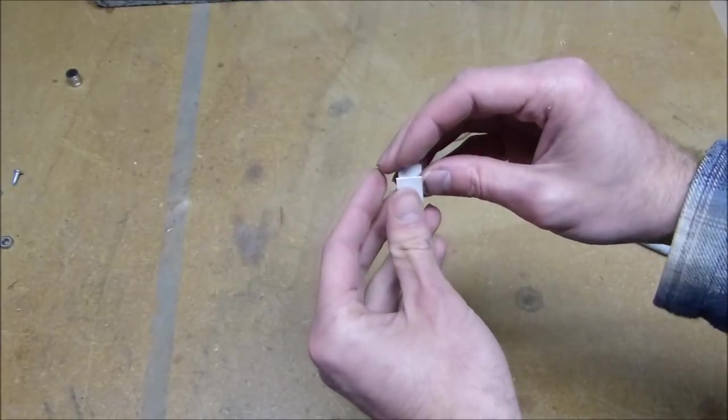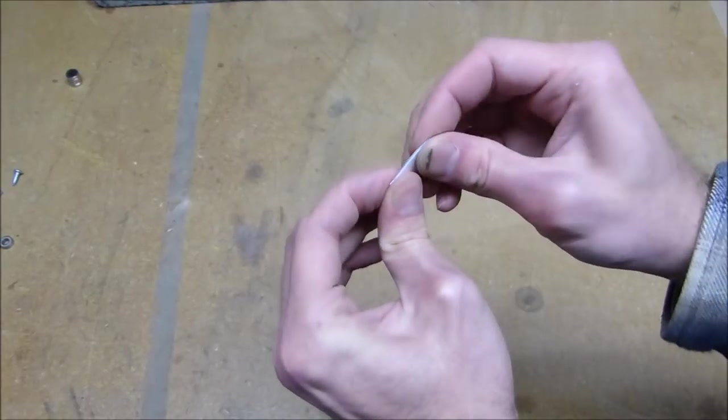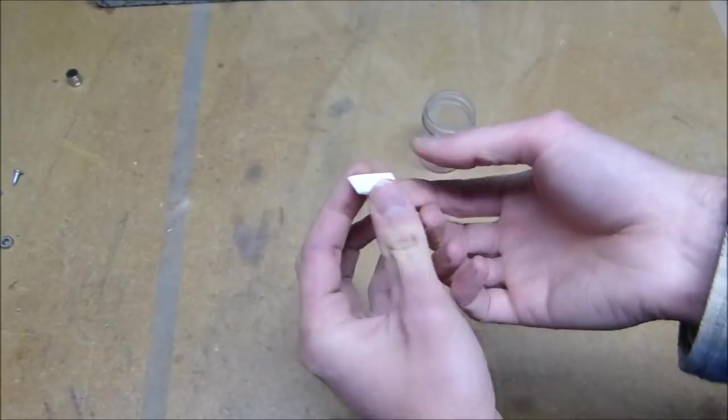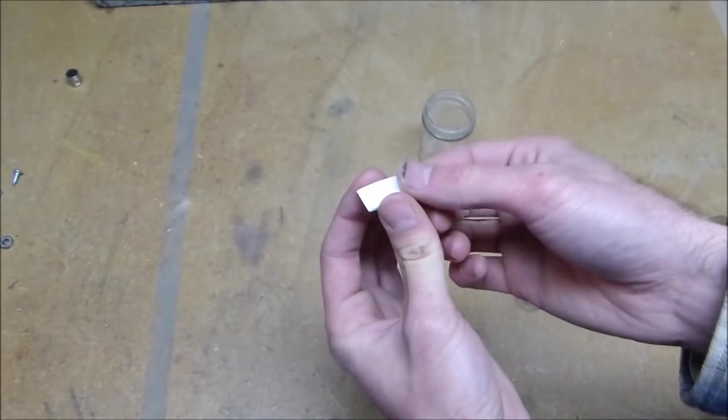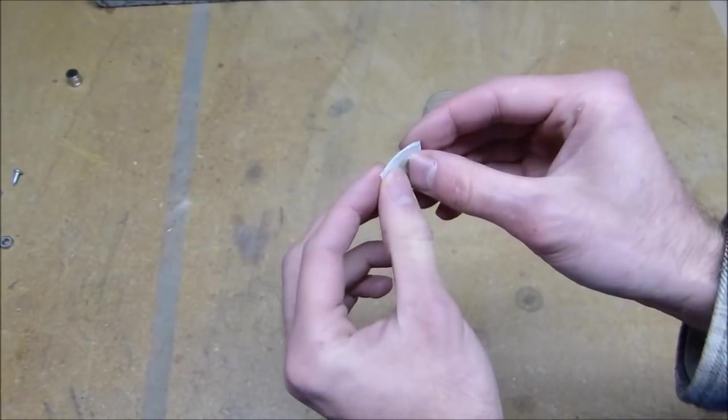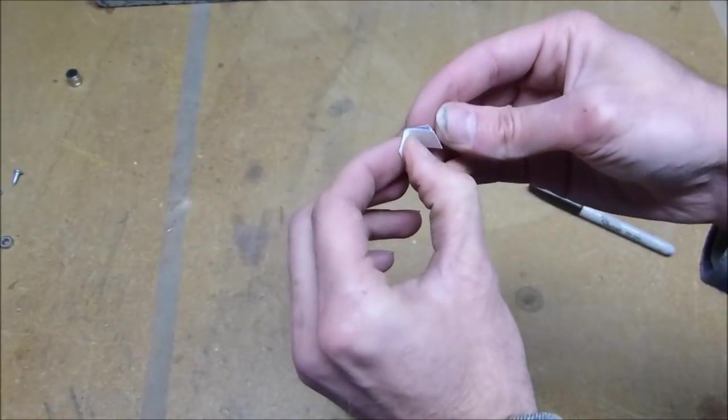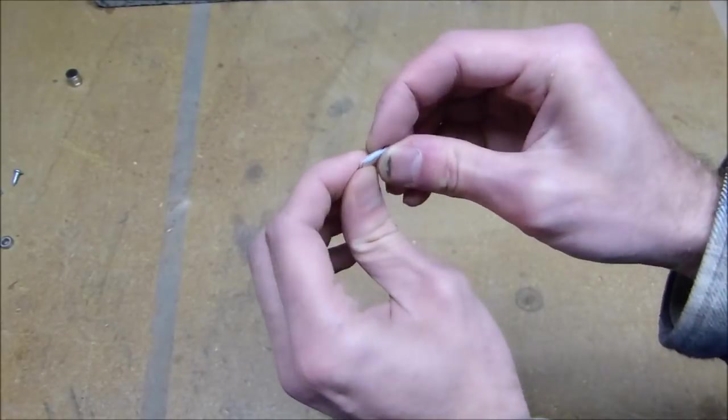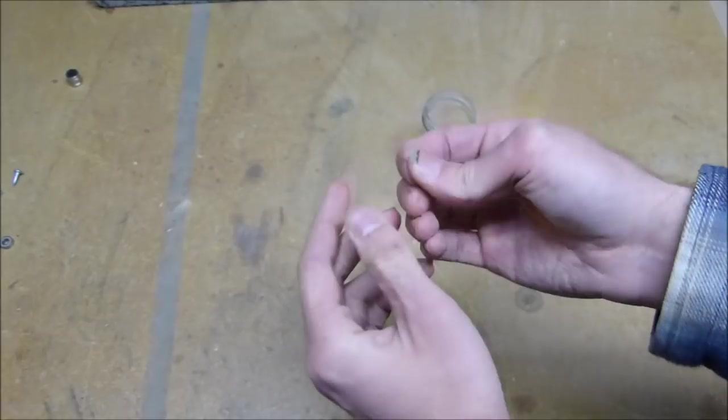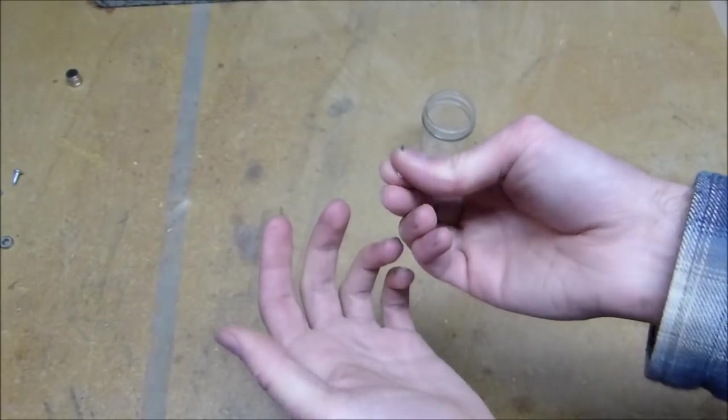Now it's two equal parts. Now fold it in thirds. Now that you fold it in half and then into thirds, that's six equal parts. Fold it in half one more time.